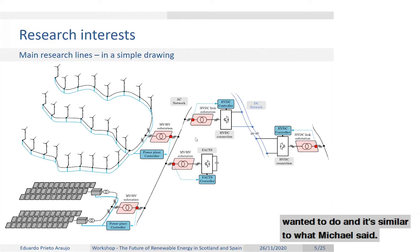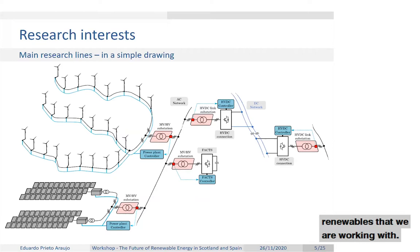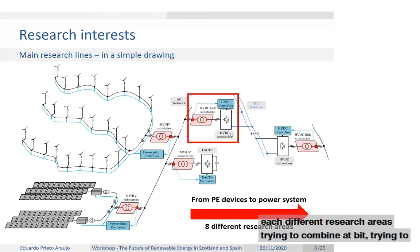This drawing summarizes the research lines we cover in our group: wind power, power plant controllers for wind, solar PV, HVDC control, DC networks, and FACTS devices — and how they can support the network to maintain the massive integration of renewables. I'll start at the device level and move toward the larger power system, covering eight different research areas.